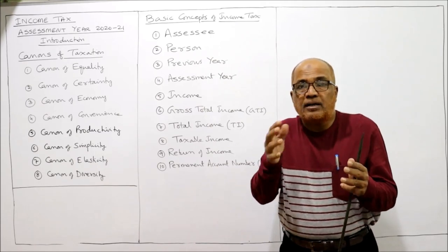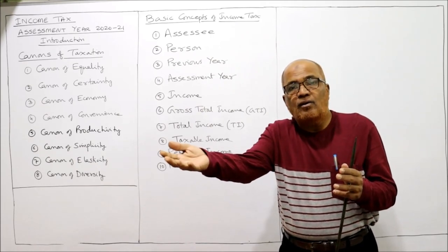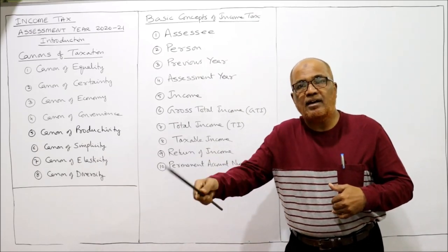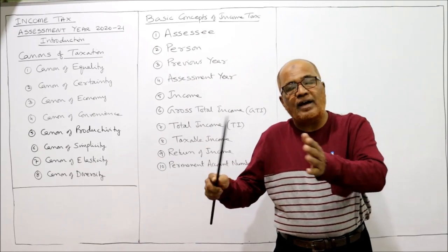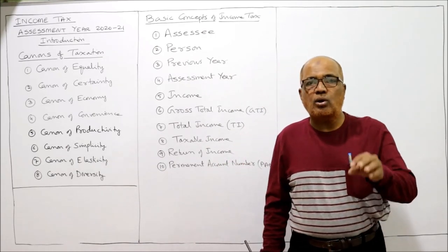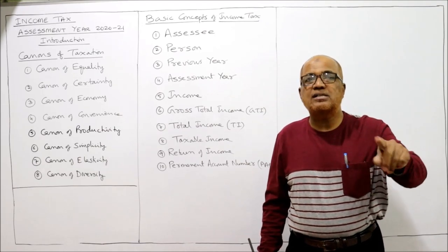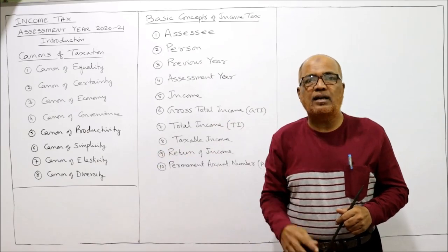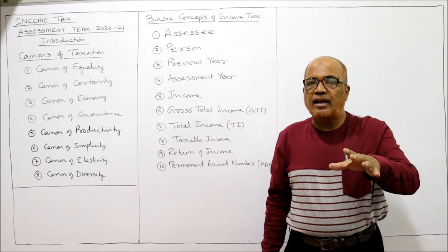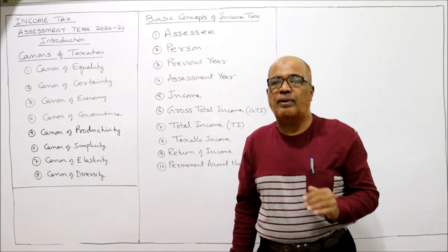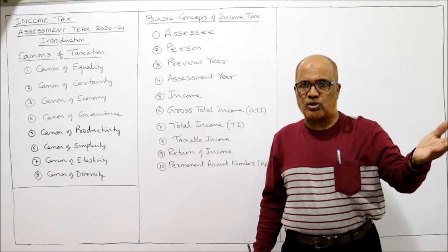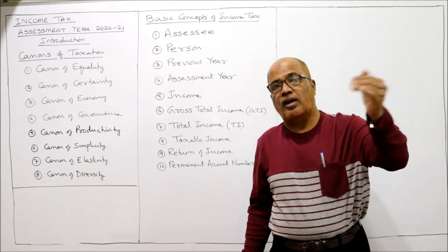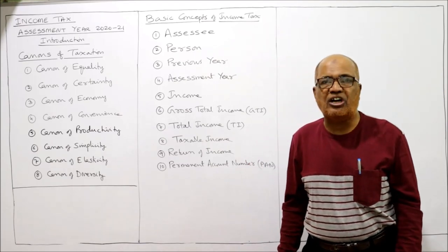A person against whom income tax proceedings have been started — for example, a person whose income exceeds the basic exemption limit but has not paid tax — also becomes an assessee. Similarly, a person who does not have his own income but is a guardian or parent of a minor or lunatic person is liable to pay tax on that minor's or lunatic's income. Also, a person to whom income tax is refundable — meaning they paid more tax than due — is also called an assessee.